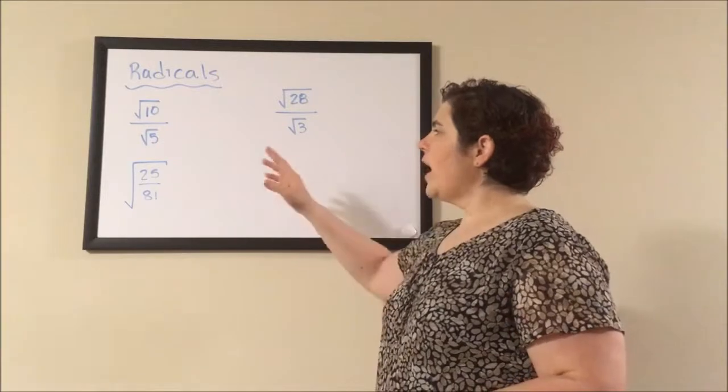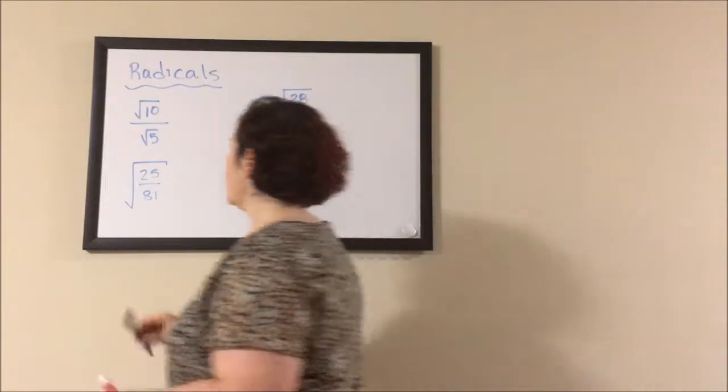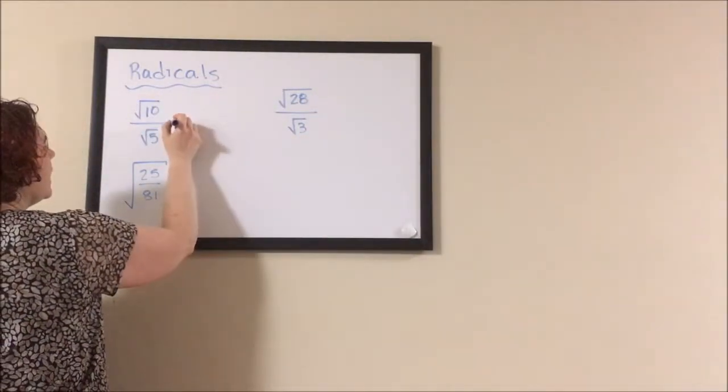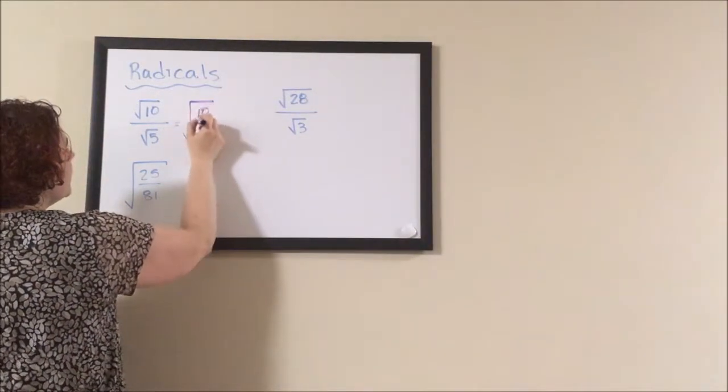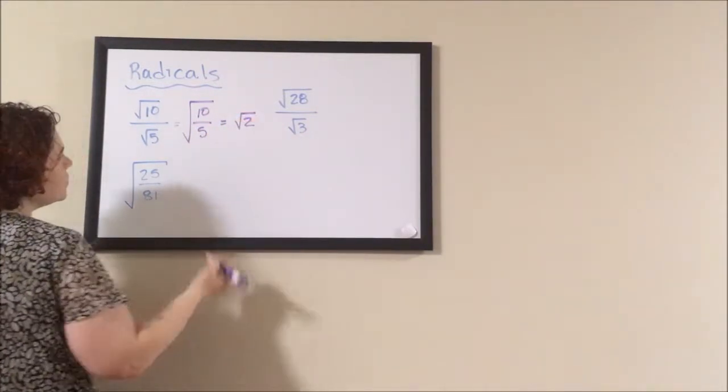When we're dividing, as long as the radicals are the same, we can rewrite this problem as the square root of 10 divided by 5, which is the square root of 2. And we're done.